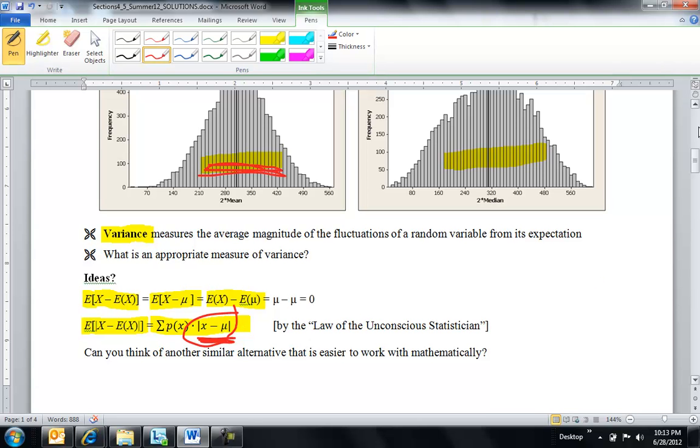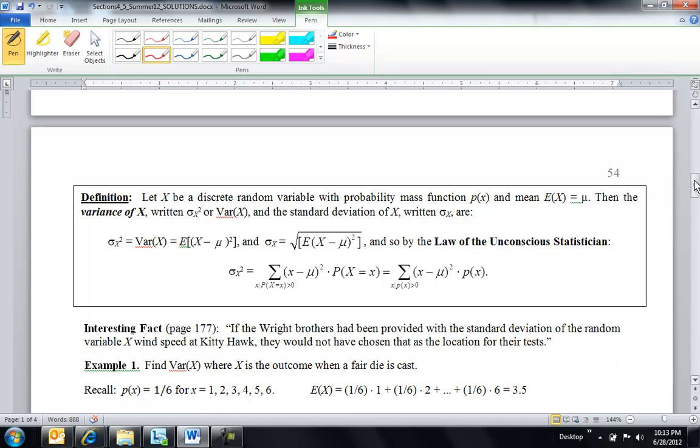So instead of going absolute value, the way we define variance is we use a square. So we're going to say x minus mu squared. So the definition of variance is expected value of x minus mu squared. How far are your x's away from mu in general on average and square that so I don't get it to be zero. Standard deviation, square root that thing. And so again, law of unconscious statistician says expected value of x minus mu squared is p(x) times (x minus mu) squared. So that is my definition for variance.